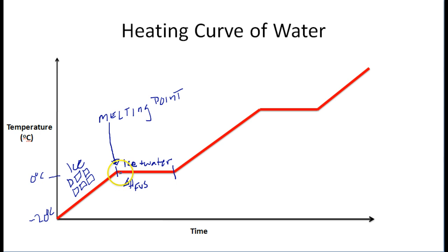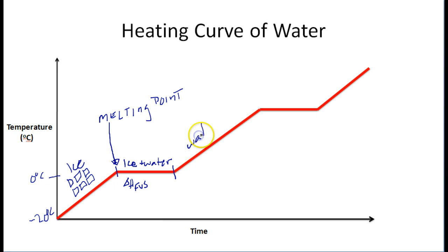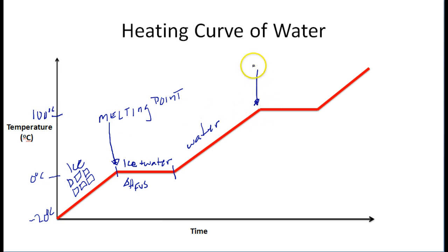You continue to heat this ice and water mixture, and right at this point all the ice has been converted to water. At that point, all the energy you are putting into this system goes into temperature increase once again. You continue to heat up this water, and then at this point something else happens — this point is the boiling point of water, which on the Celsius scale is 100 degrees Celsius.